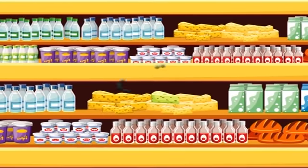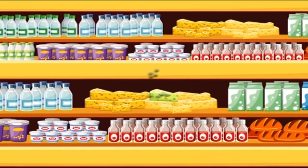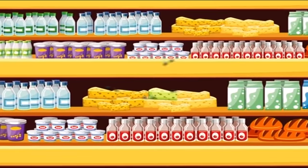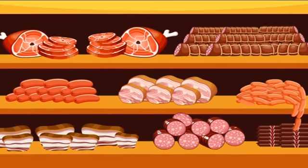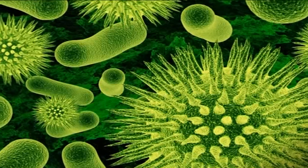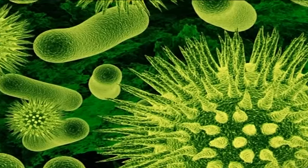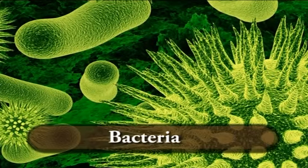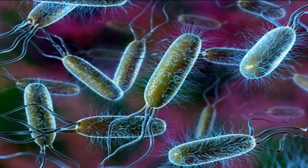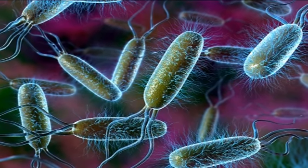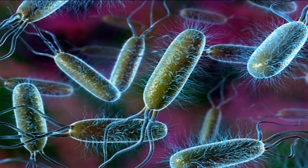Moving on to our first module: foodborne illnesses. Foodborne illness, also known as foodborne disease or food poisoning, is any illness resulting from the consumption of contaminated food. Some of the microorganisms that cause foodborne illnesses are bacteria and viruses. Among all these microorganisms, bacterial contamination is the most commonly occurring cause of foodborne illnesses in the catering industry.